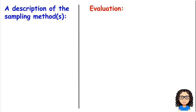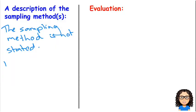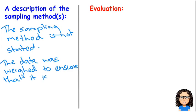So we don't actually know what the sampling method is. So that's the first thing that we want to say. The sampling method is not stated. But we have been told that the data was weighted to ensure that they are represented. So the data was weighted to ensure that it is representative of New Zealand.